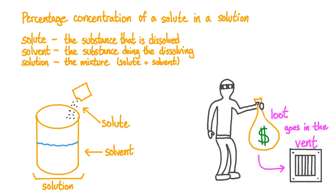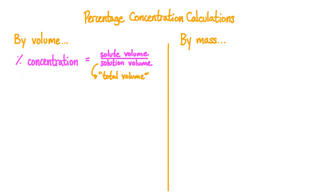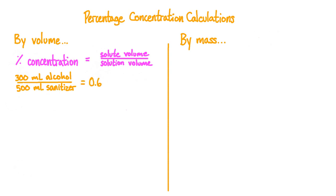When we know the definitions of these words, it becomes easier to discuss calculations involving percentage concentration. The base formula is: percentage concentration by volume equals the solute volume divided by the solution volume — also referred to as the total volume. As a real-world example, if there are 300 mL of alcohol in a 500 mL solution of hand sanitizer, we calculate 0.6, meaning the hand sanitizer is 60% alcohol by volume. Note that there are three variables: the percentage concentration, the solute volume, and the solution volume. If we know any two, we can solve for the third.